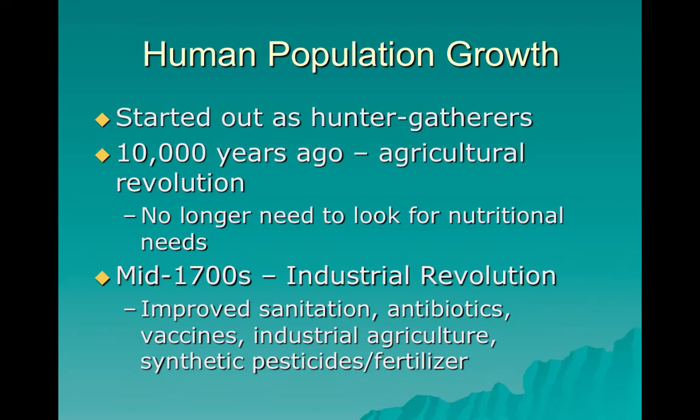Then in the mid-1700s, we had the industrial revolution. Besides the ability to make things quickly, easily, and cheaply, we also developed techniques that improved the length of our lives and decreased the number of people who died. Those include improved sanitation, antibiotics, vaccines, industrial agriculture — farming hundreds of acres very efficiently — and synthetic pesticides and fertilizers. All of those things led to a population explosion.